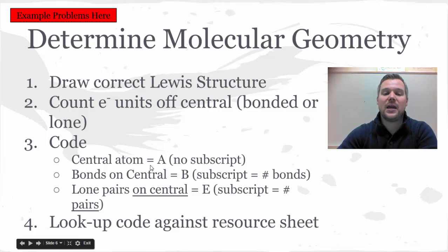So in this case, central atom is going to be A. There will never be a subscript on A. If you're drawing a subscript on A, you probably have a molecule of two central atoms, and you need to separate those two central atoms for two different codes.